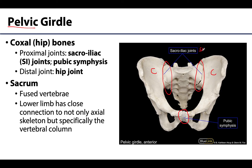Posteriorly, the coxal bones articulate with the sacrum at the sacroiliac, or SI, joints. The sacrum and its close neighbor the coccyx are the fused portions of the vertebral column. So the pelvic girdle not only connects to the axial skeleton, but specifically to a portion of the vertebral column, which is unique and did not occur with the pectoral girdle.